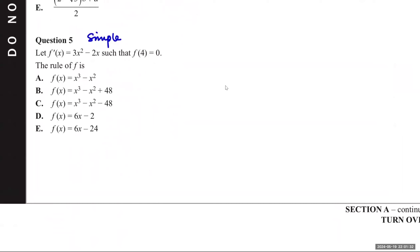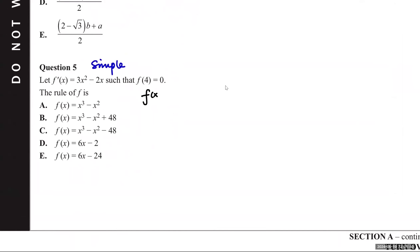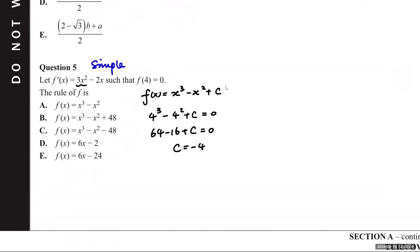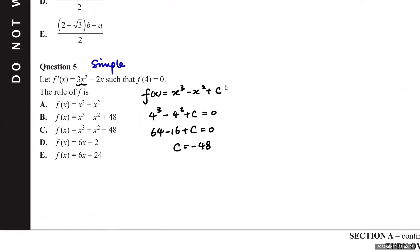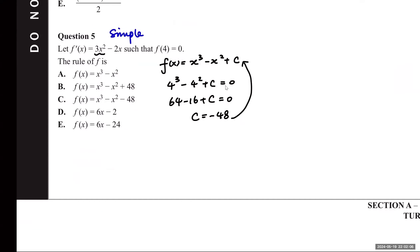Question 5. Let f′(x) = 3x² − 2x such that f(4) = 0. We anti-differentiate to get f(x) = x³ − x² + c. Because f(4) = 0, we have 4³ − 4² + c = 0, so 64 − 16 + c = 0, therefore c = −48. Putting this back gives option C as the correct answer.